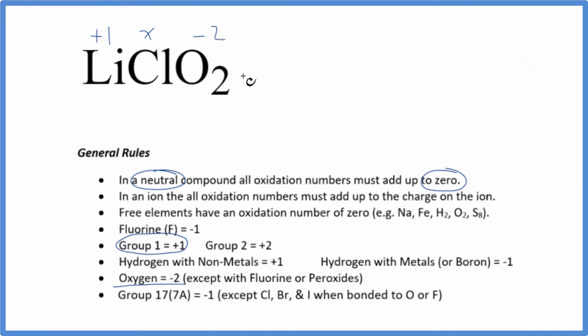So based on this information, and that it'll all add up to zero, just set an equation up. We have one plus X for the chlorine. Now two times minus two, that's minus four. That'll equal zero.